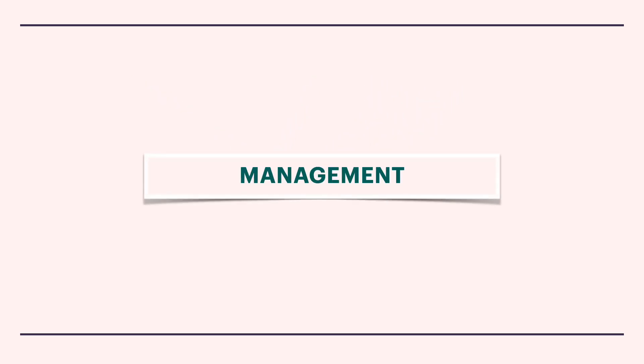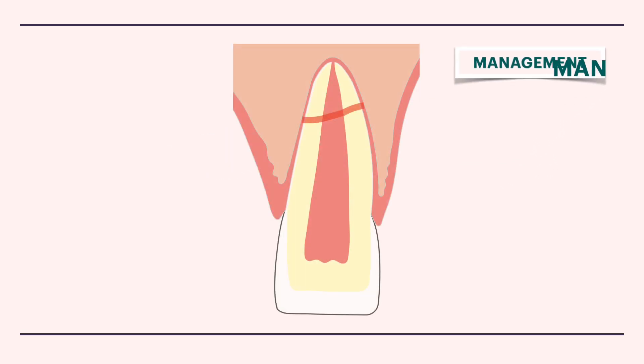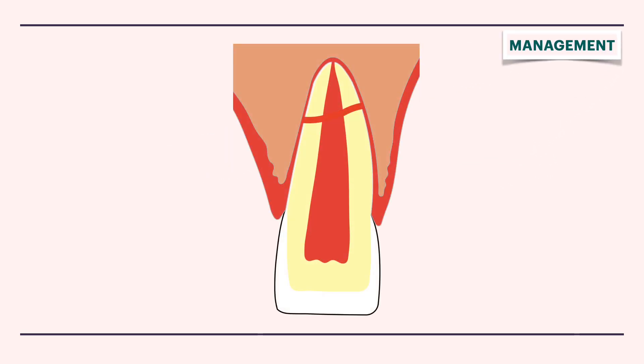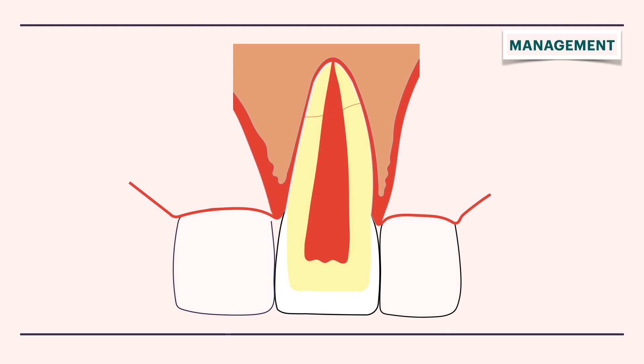So, in most cases, the root fracture is self-limiting and requires minimal management. The management basically involves repositioning of the coronal fragment and confirming it with a radiograph, followed by stabilization with a firm and immobile splint that is passively applied.